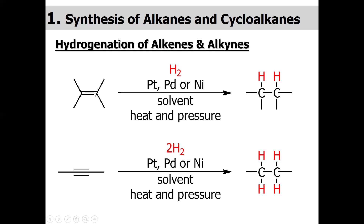If you have just one double bond, one mole of hydrogen will be consumed because the pi bond is broken across both carbon atoms. If you have a monoalkyne group, two moles of hydrogen will be used because there are two pi bonds — each pi bond is consumed by two hydrogen atoms. Then you will get the corresponding alkane. For example, if you have 2-butyne, you will get butane.